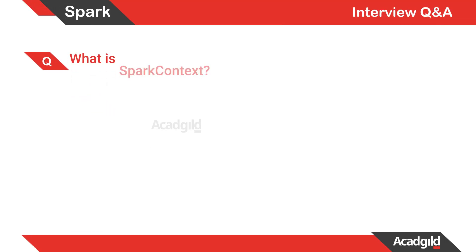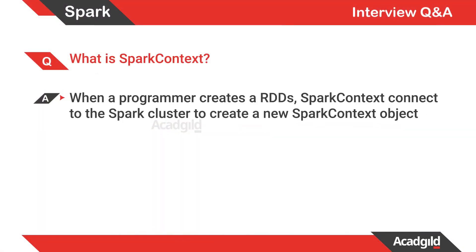Let's try to understand what Spark Context is. In our previous section we discussed Spark architecture at a very high level overview, where we discussed how Spark processes a job. At that point we discussed that Spark Context is the first point of contact for any Spark job. Now let's try to explore Spark Context in a detailed way.